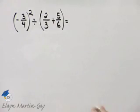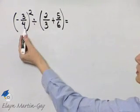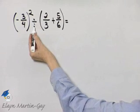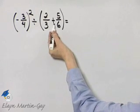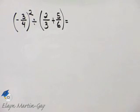Let's simplify this expression. Here we are squaring a fraction and then divided by, here within this set of parentheses we have addition.